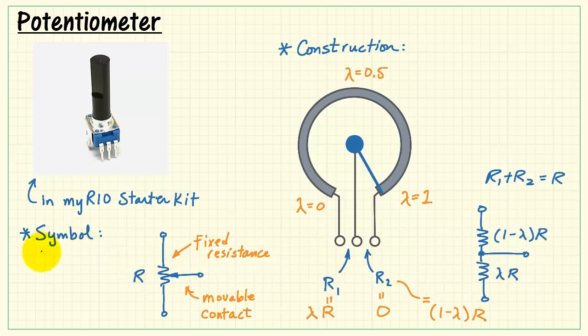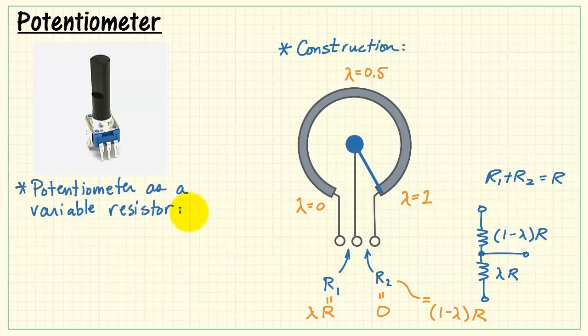Now let's investigate how we can use the potentiometer as a variable resistor. There's really two ways that this is typically done. We can either use one pair of terminals, say this pair, or we could use the other pair of terminals. Either way works fine. You get a variable resistance that way.